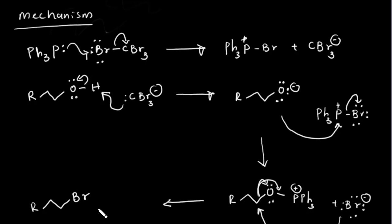So it's a very simple reaction. We start with an alcohol and convert it to a halide — that's the Appel reaction. Remember to draw the curved arrows and lone pairs when drawing the mechanism, as those are very important in organic chemistry. Also remember to draw the plus and minus charges. If you haven't subscribed to my channel, please subscribe and share with your friends.